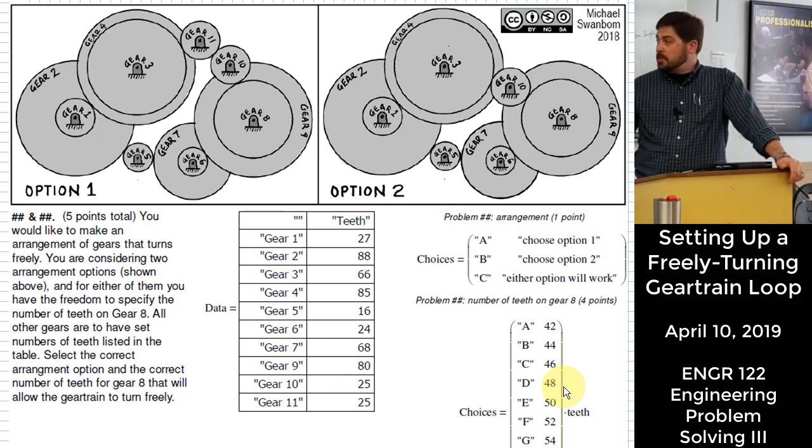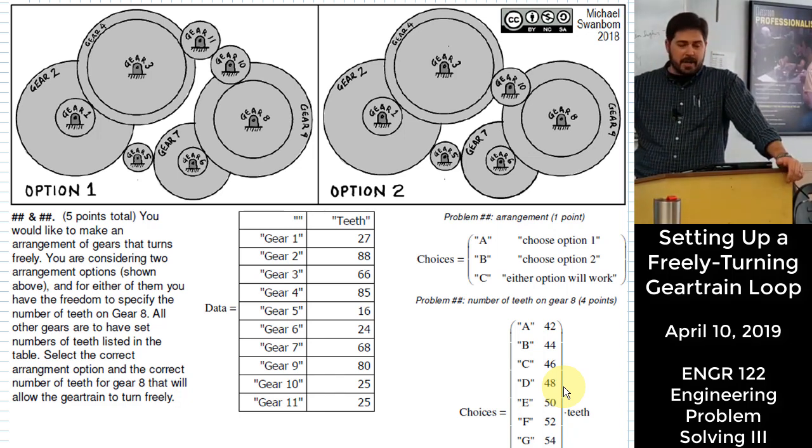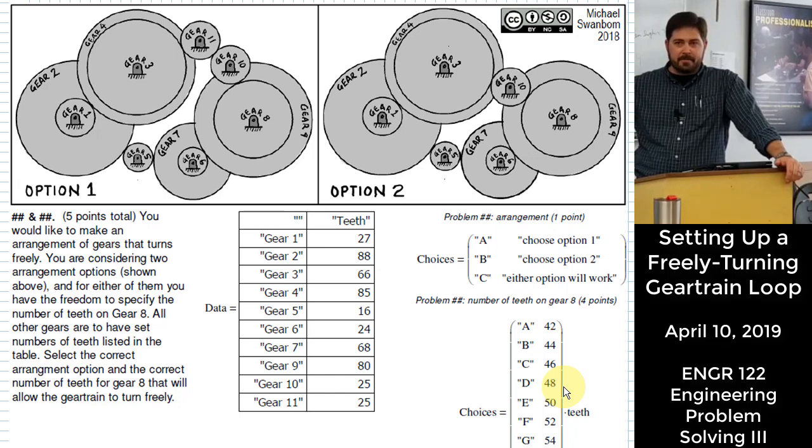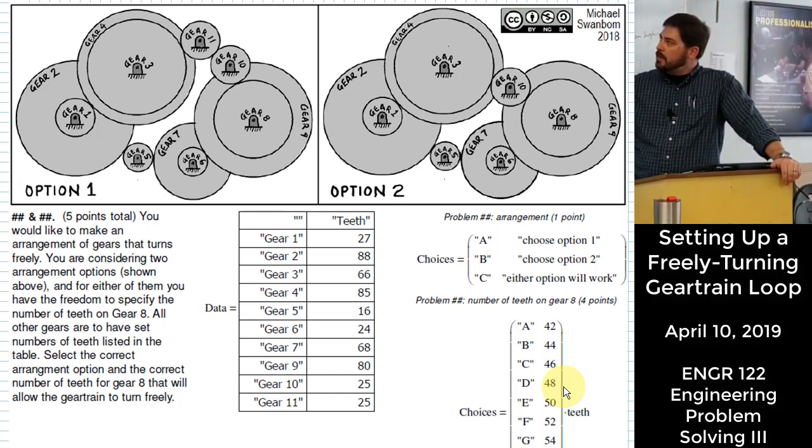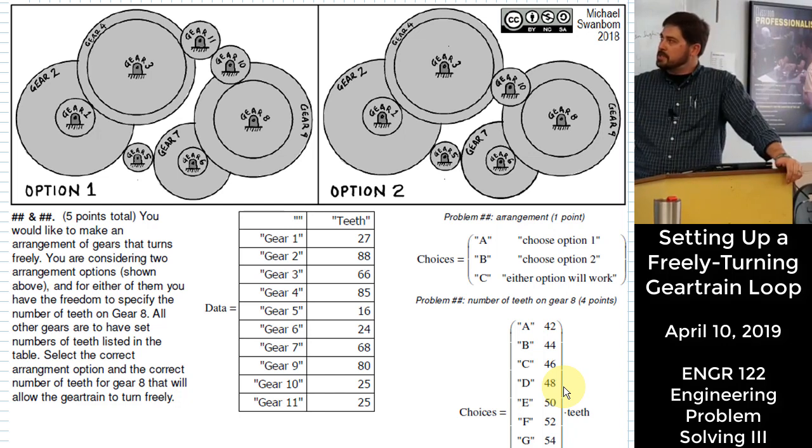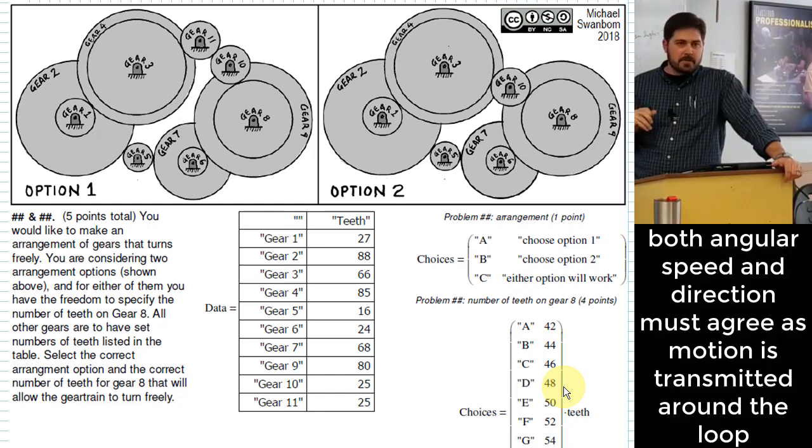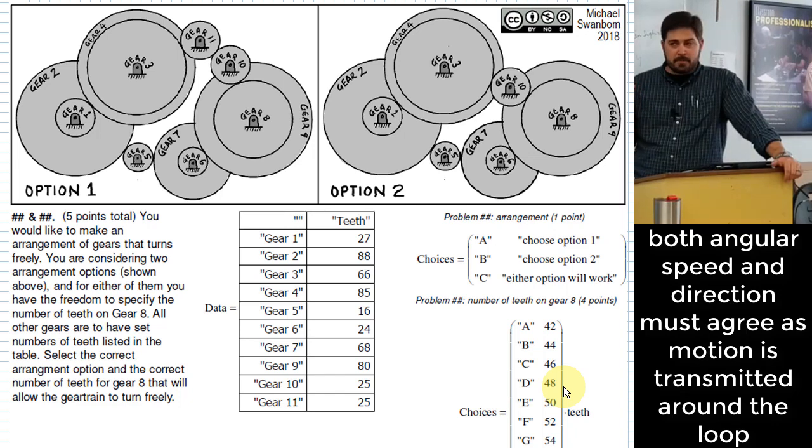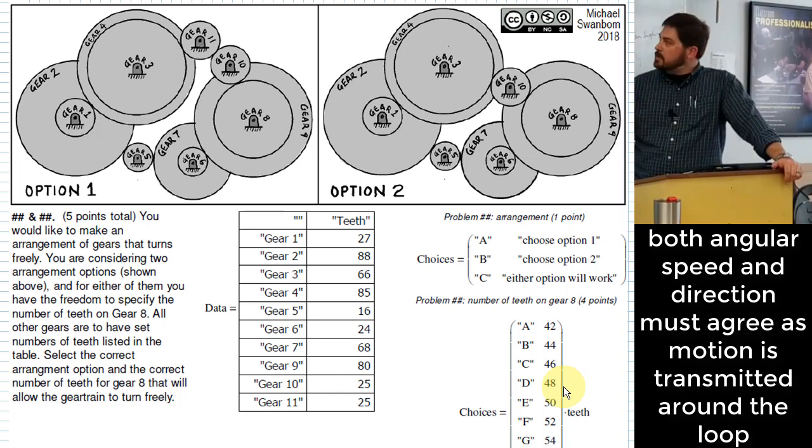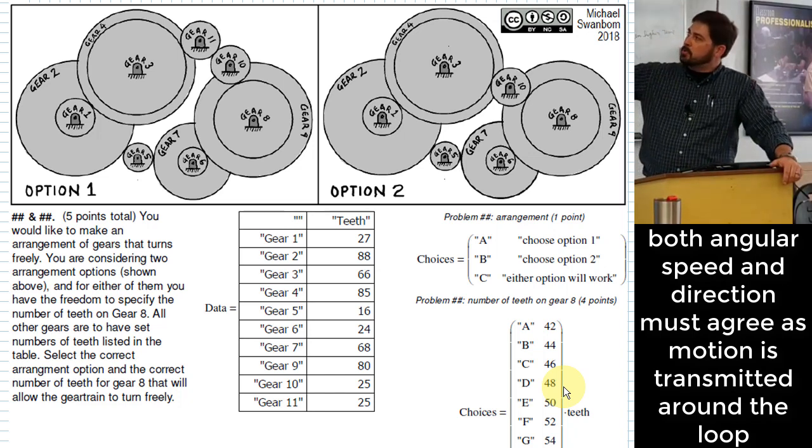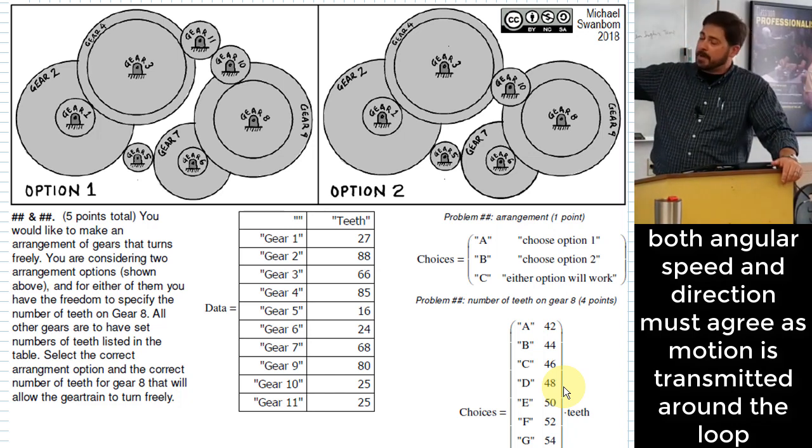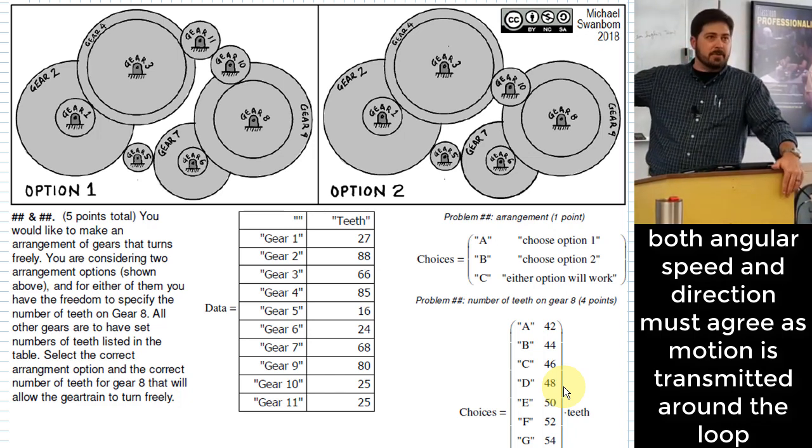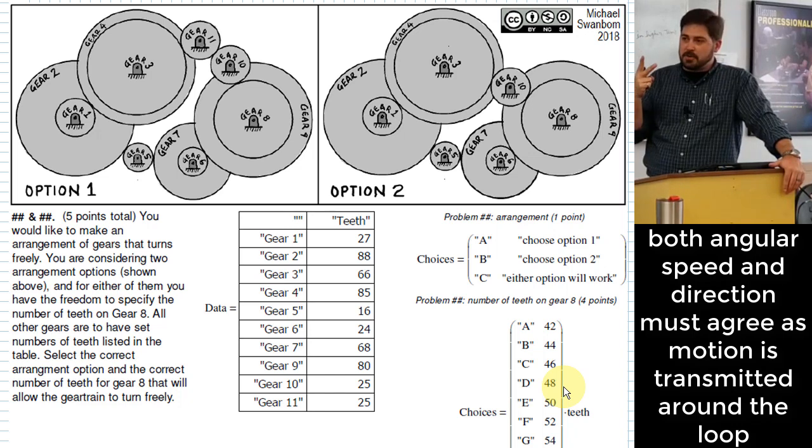So what we're going to do here is we're going to try to set up a gear train so that it is able to freely turn even though there are two different directions that torque could be transmitted through the gear train. The way to think about this is that it's possible to set up a gear train so that the direction that one path of torque through the gear train, the type of turning that it wants to do through one path is different than the type through the other path. That can take two different forms.